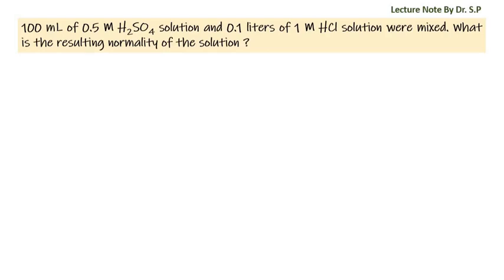We have a question: 100 milliliters of 0.5 molar sulfuric acid solution and 0.1 liters of 1 molar hydrochloric acid solution were mixed. What is the resulting normality of the solution?